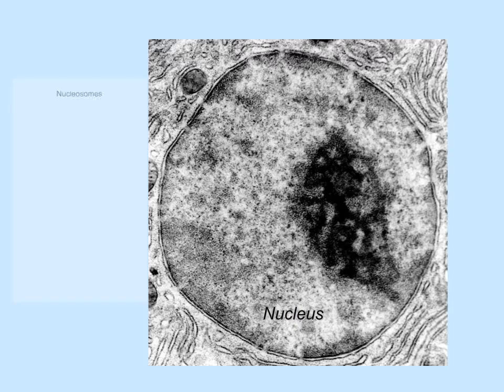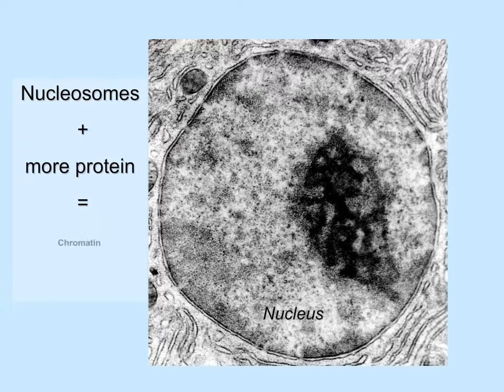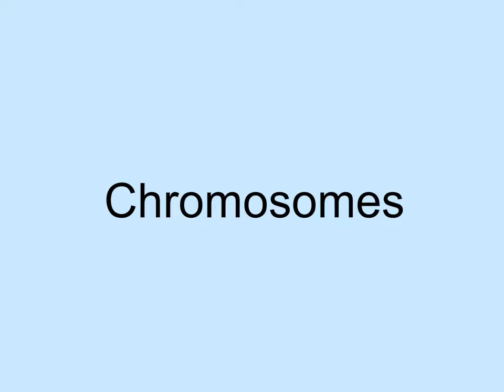If we further coil the nucleosomes and their linking DNA with more proteins, we get highly condensed chromatin. The grainy substance in this micrograph is the chromatin. Chromosomes are sections of DNA that contain the genetic information of an organism. If we look at all the chromosomes of an organism, this totality of genetic information is called the genome.